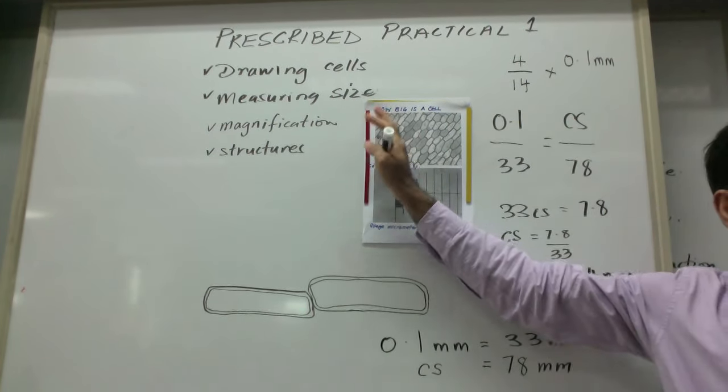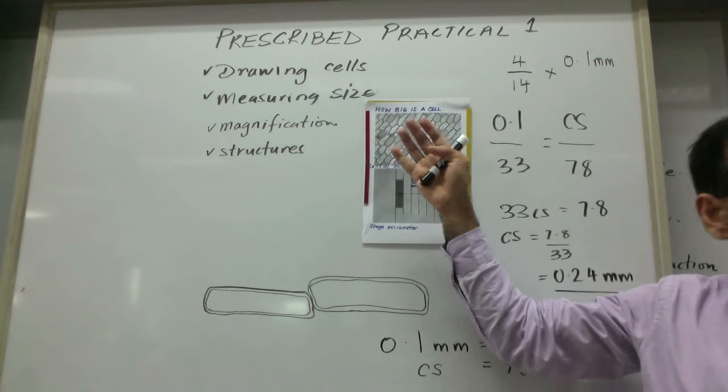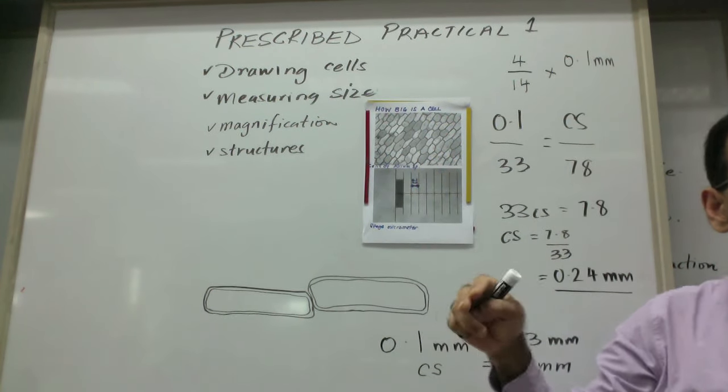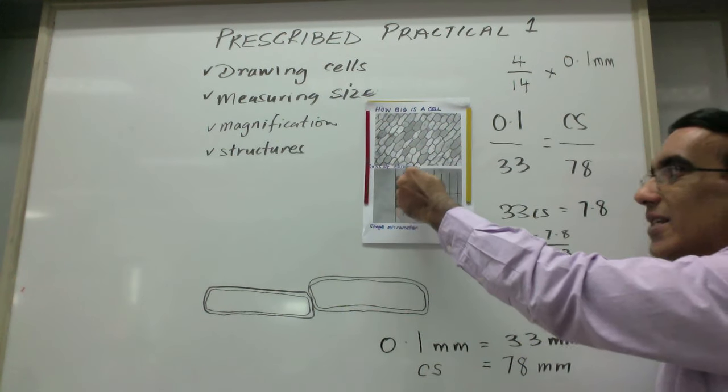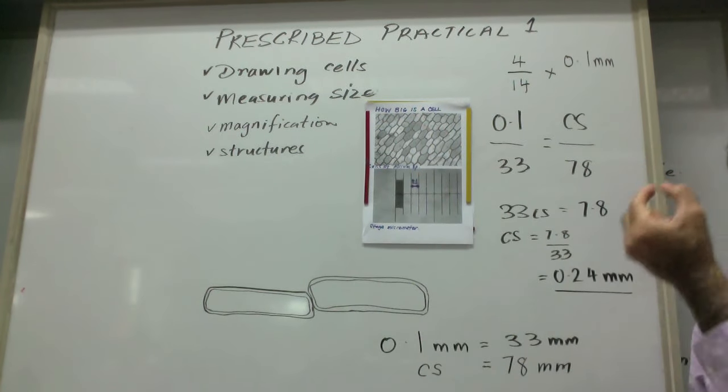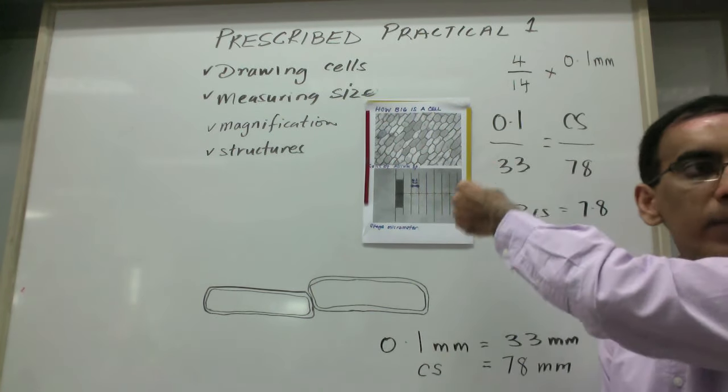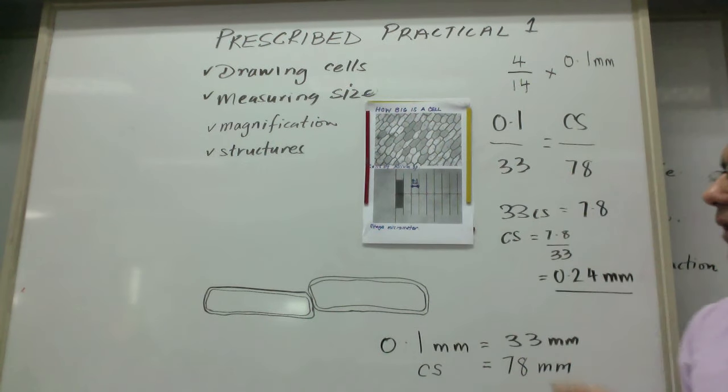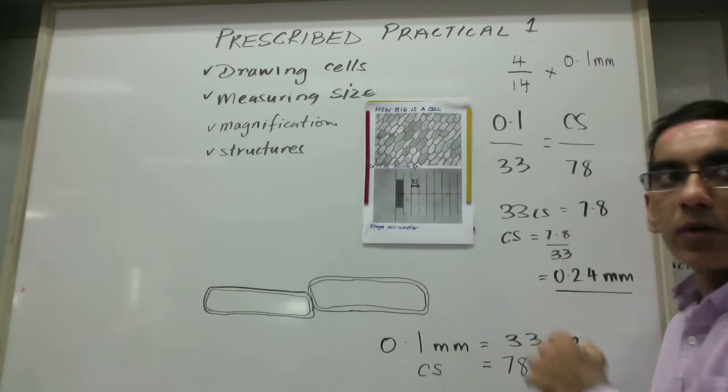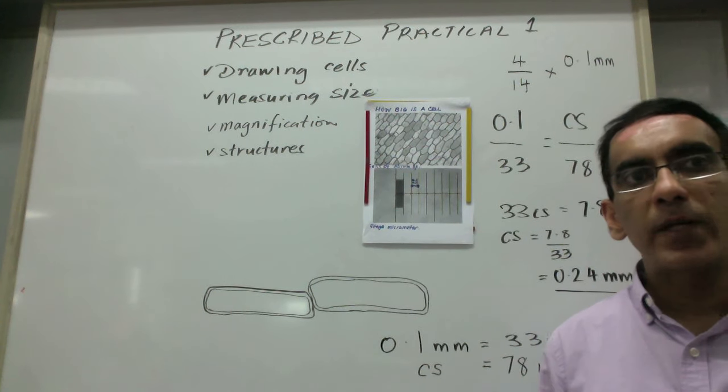This is how we would work out the sizes of things, not just on this picture from the light microscope, but if you get something from an electron microscope and you're told that this little increment is one micrometer or two micrometers, then using that same concept you would measure things on the micrograph.